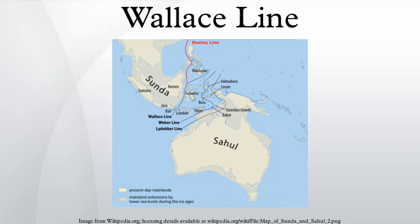Wallace noticed this clear division during his travels through the East Indies in the 19th century. The line runs through Indonesia, between Borneo and Sulawesi, and through the Lombok Strait between Bali and Lombok. The distance between Bali and Lombok is small, about 35 km.